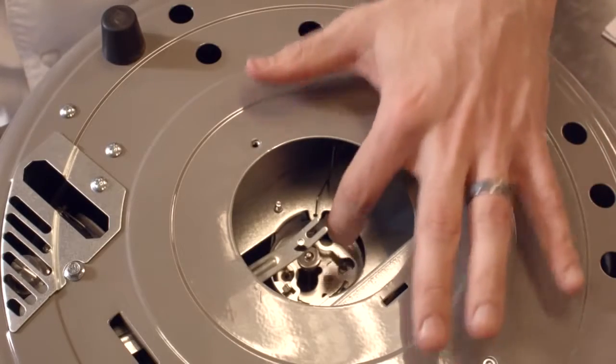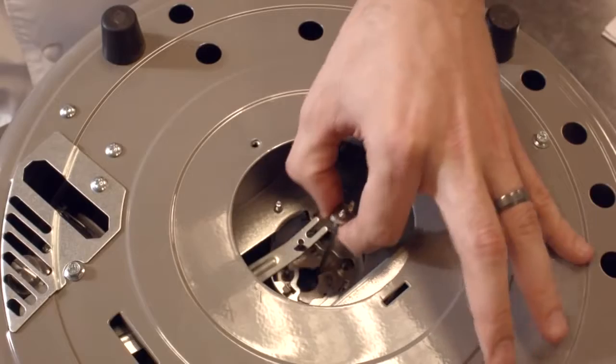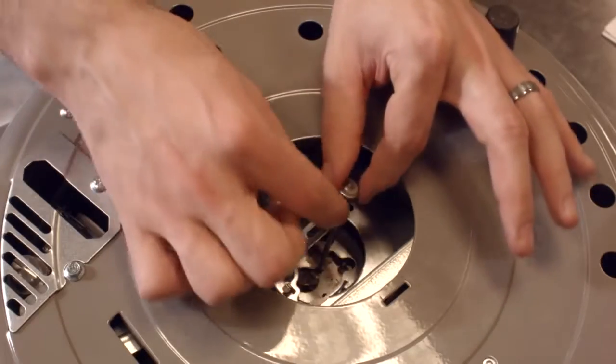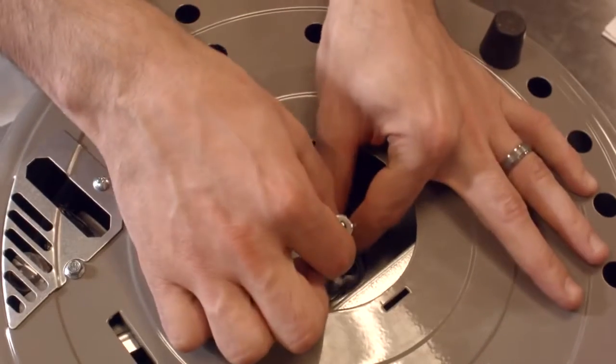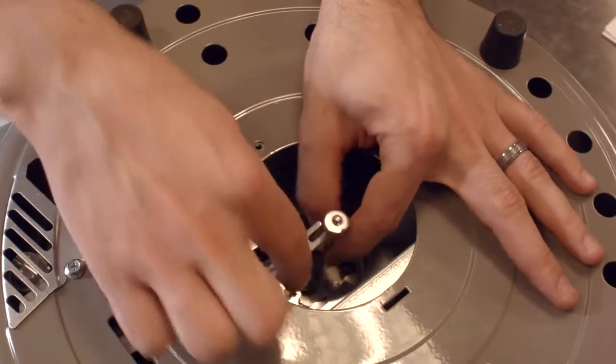Once you've got that spring hooked back up to the base in both spots, you can get the plunger from the thermal sensor again. Remember we have this one slight pin that needs to go in that hole.